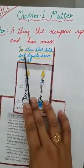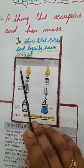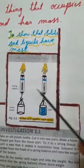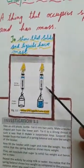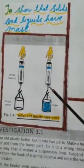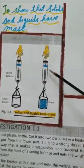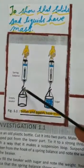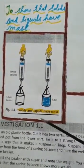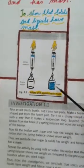First activity to show that solids and liquids have mass. Children, see this figure. In this figure is a spring balance. When the school will reopen, I will show you in the laboratory this spring balance in which scale is given over here. This is a scale. Here is a hook. These are the strings. Now take an old plastic bottle, cut it into two parts. These are the two beakers.